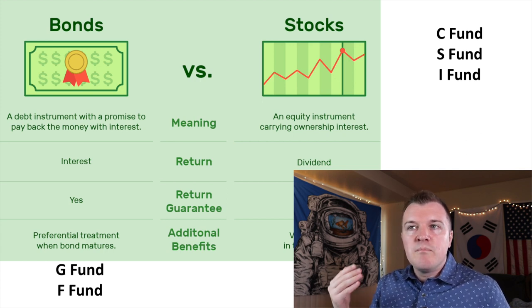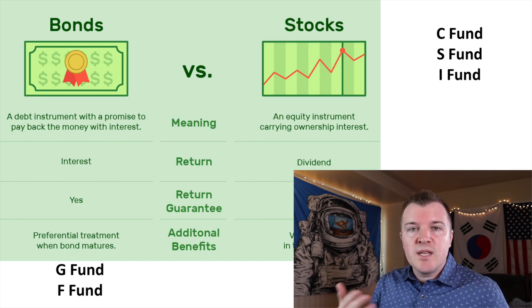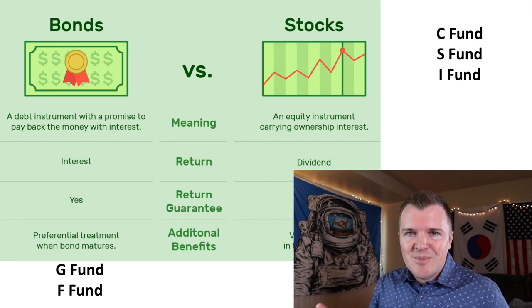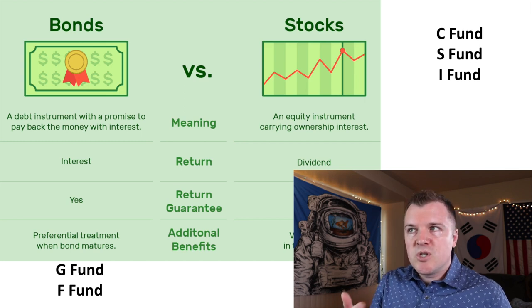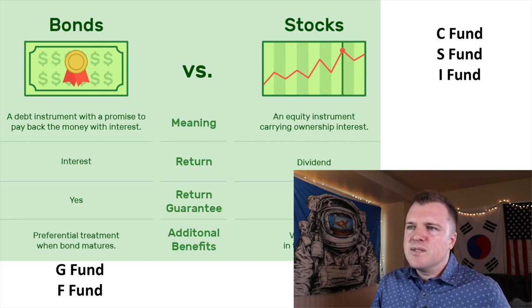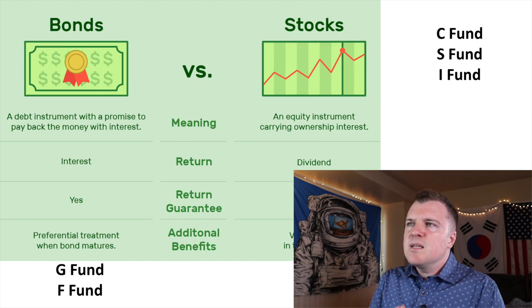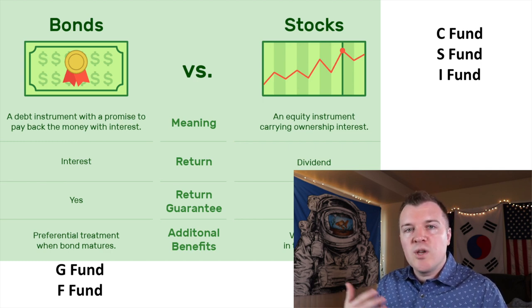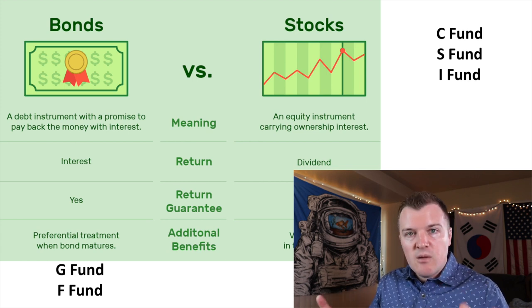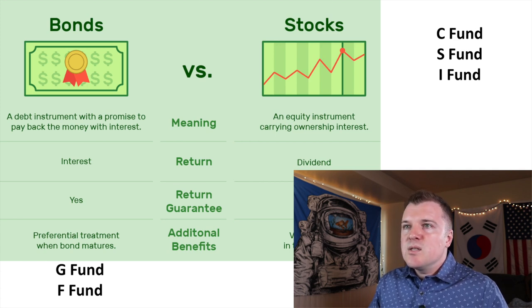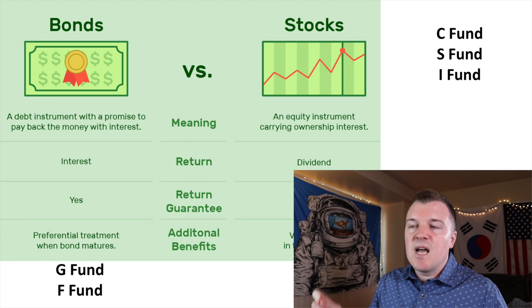The more common names you might know these by are bonds and stocks. The F and G funds are bonds. A bond is a debt instrument with the promise to pay back money over a predetermined amount of time with interest, and there is supposed to be, most of the time, a guarantee that you will get that interest when the bond matures. Stocks are completely different — for a stock, you're buying a share of the equity in a company. If the company becomes more valuable, your share of the equity becomes more valuable. Some companies offer dividends, where they pay out their profits to shareholders quarterly. Not all companies do this, but many large companies do. You just need to know that G and F are bonds, and C, S, and I are stocks.